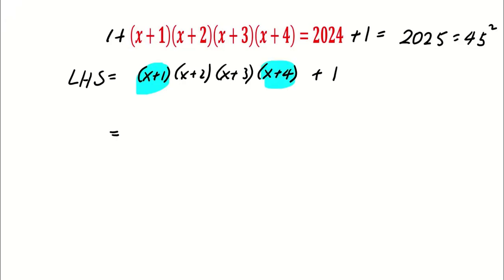We combine (x + 1) and (x + 4) to form x² + 5x + 4. And then combine (x + 2) and (x + 3) to get x² + 5x + 6.